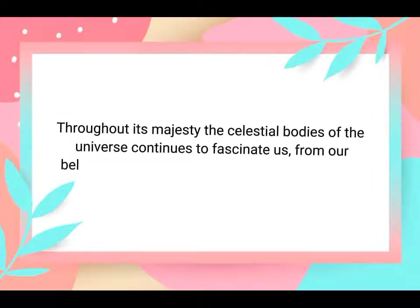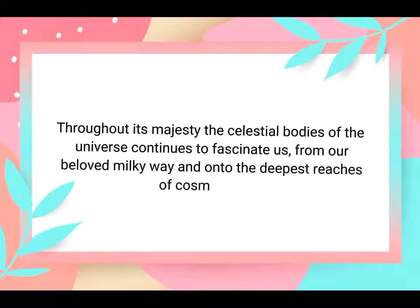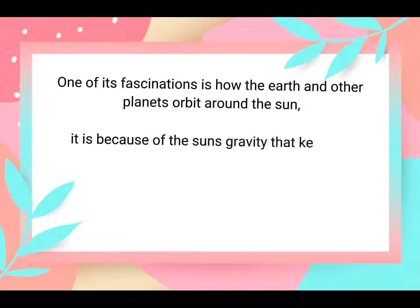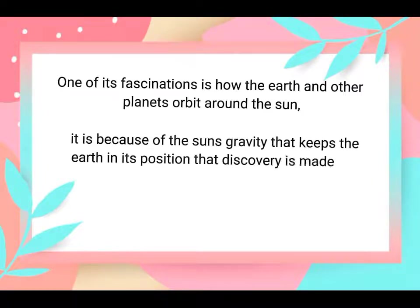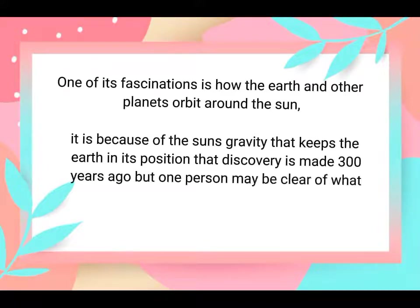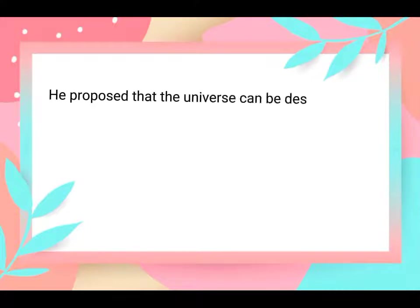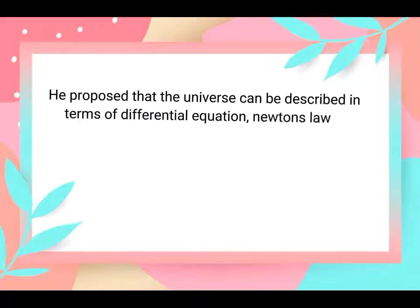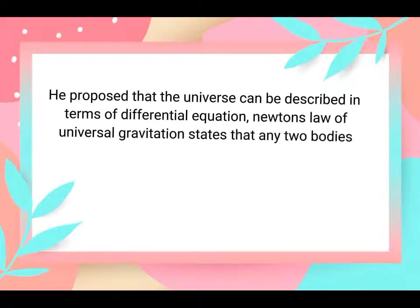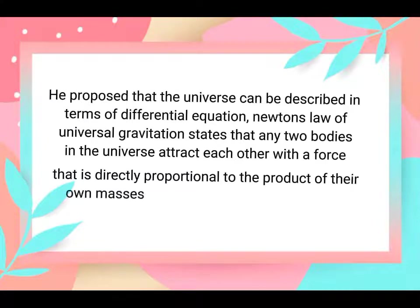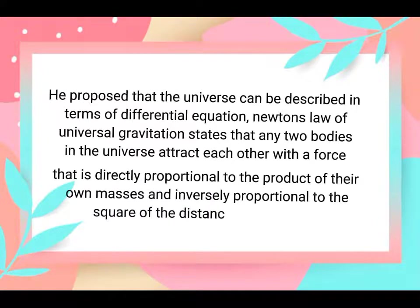The celestial bodies of the universe continue to fascinate us, from our beloved Milky Way to the deepest reaches of the cosmos itself. One of its fascinations is how the earth and other planets orbit around the sun. It is the sun's gravity that keeps the earth in its position. That discovery was made 300 years ago, and the person who made clear what gravity truly is was Sir Isaac Newton. He proposed that the universe can be described in terms of differential equations.